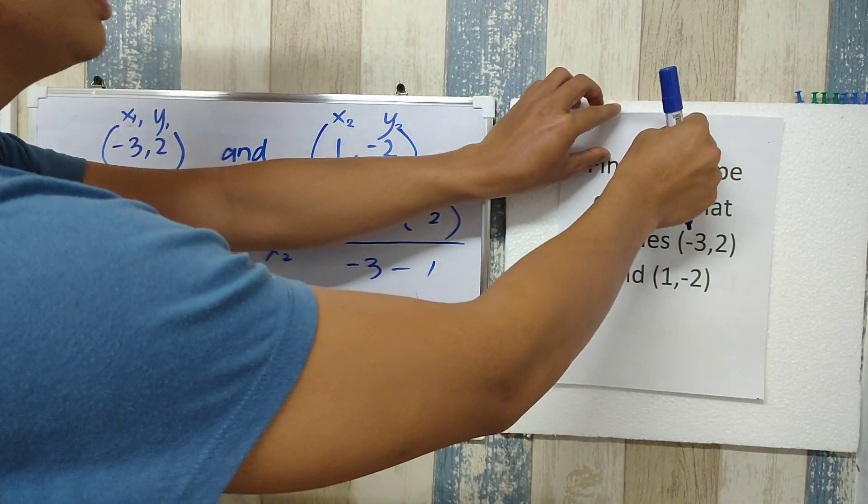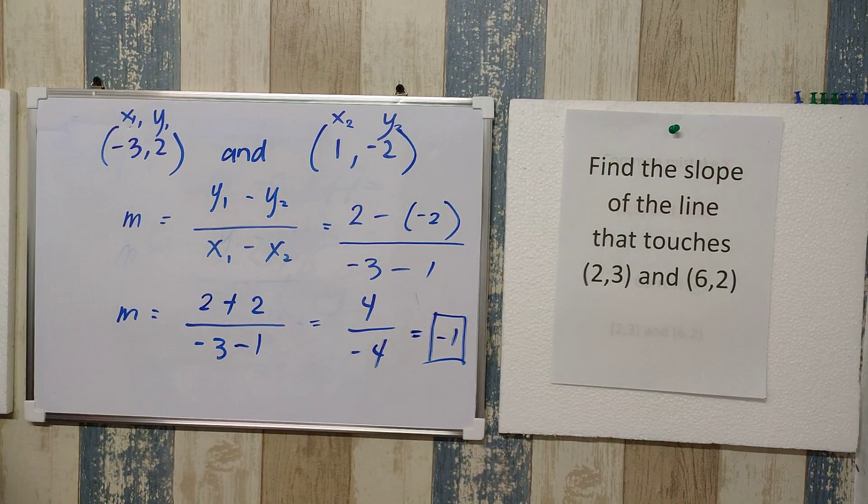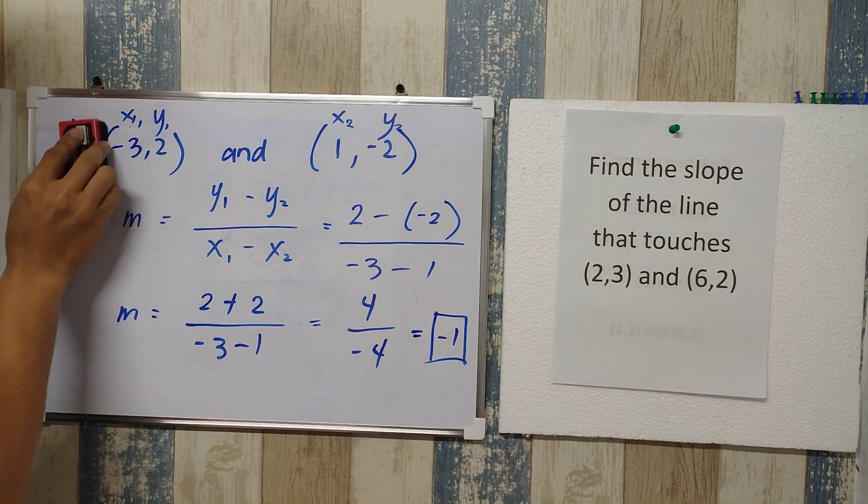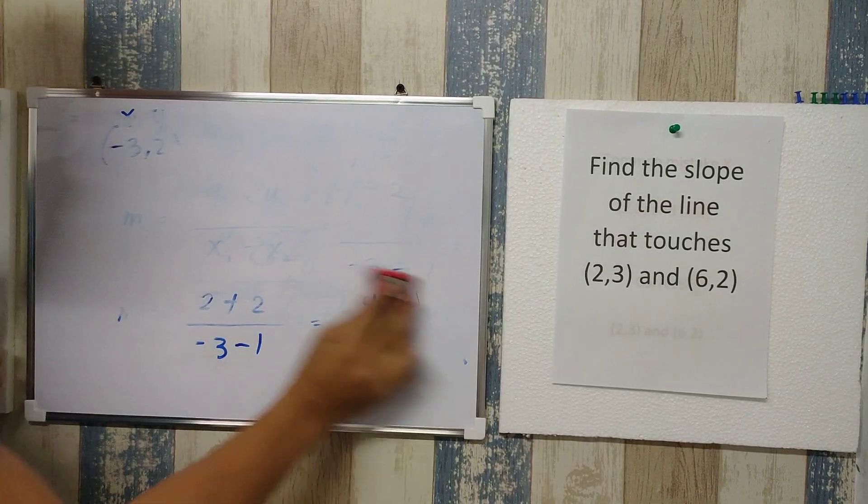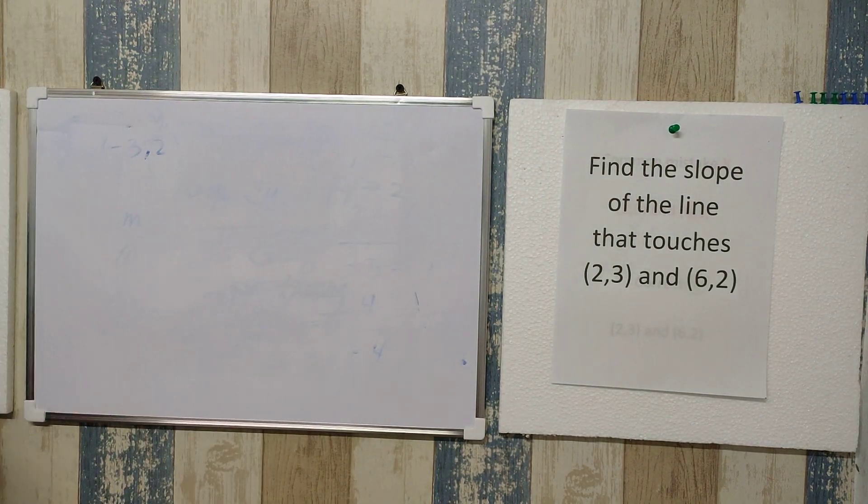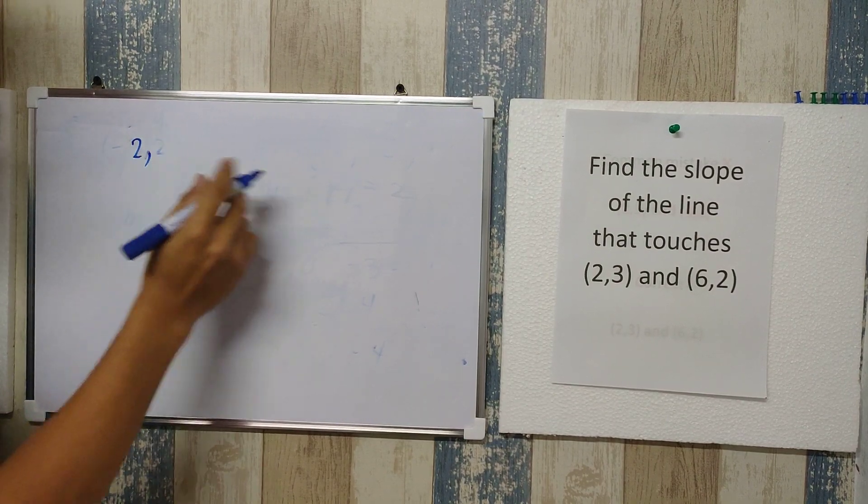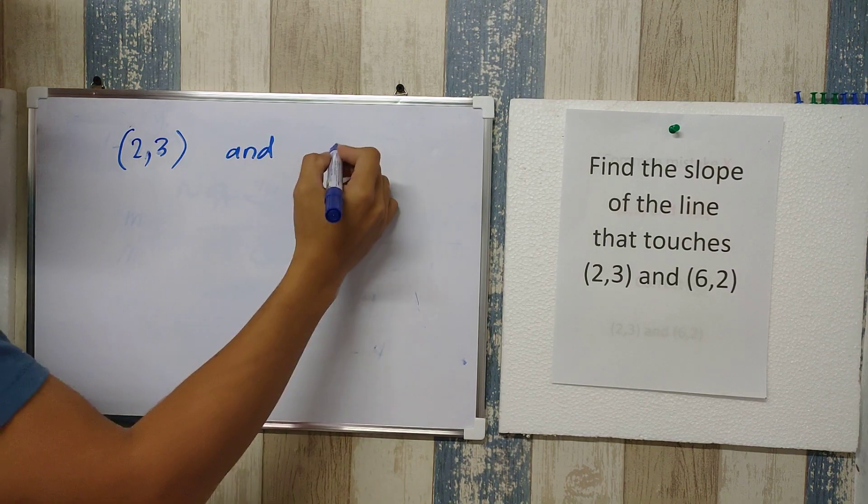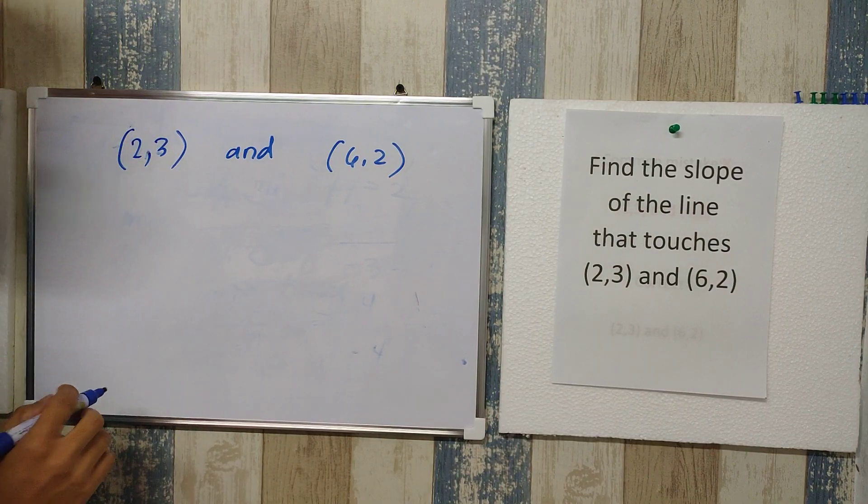As our second example, we have here: find the slope of the line that touches 2, 3 and 6, 2. Let me erase this first.